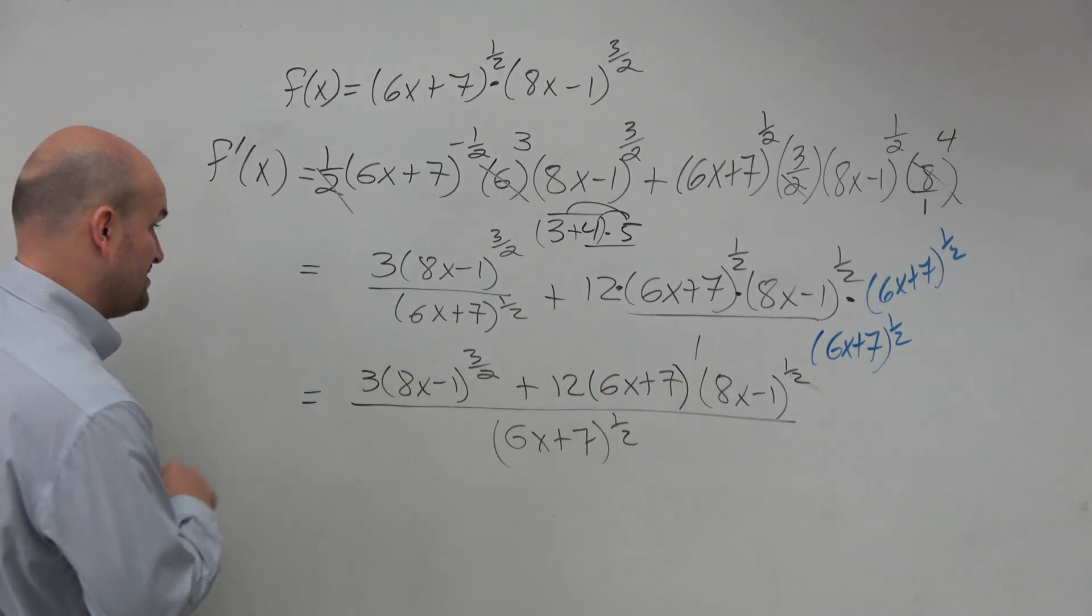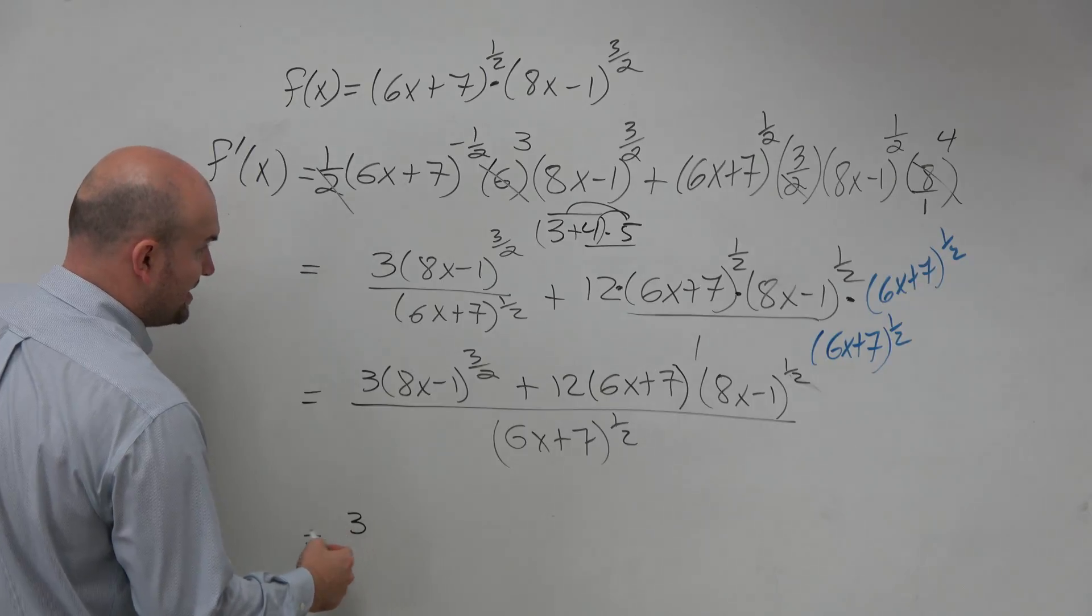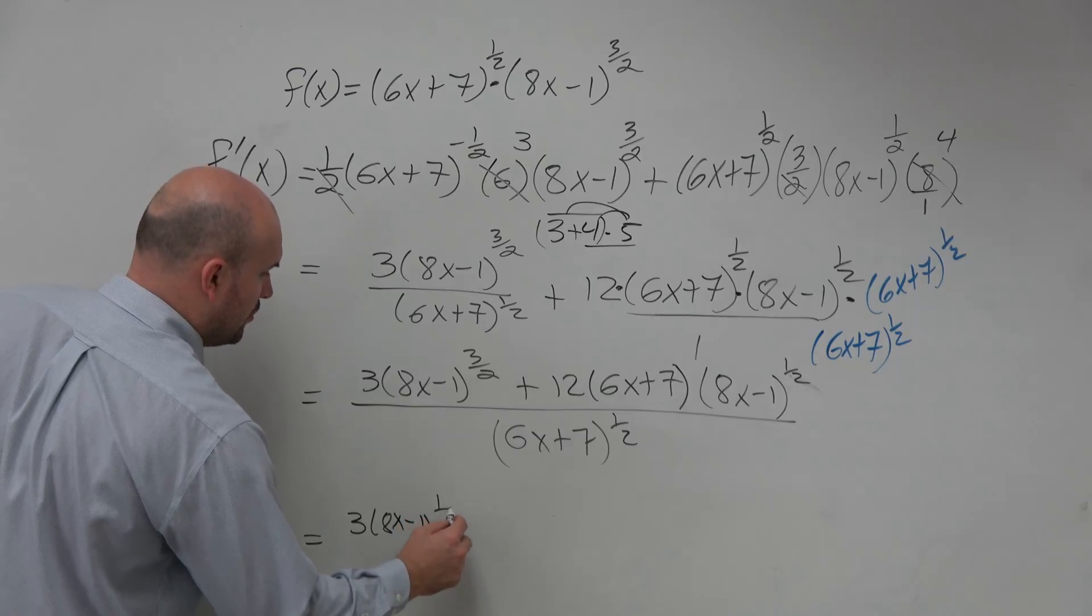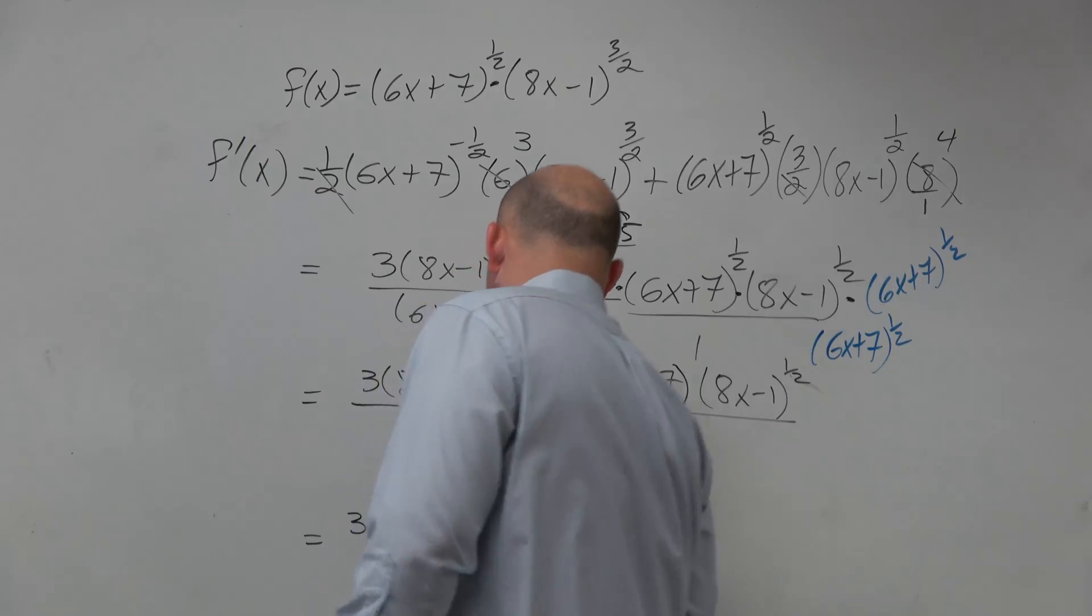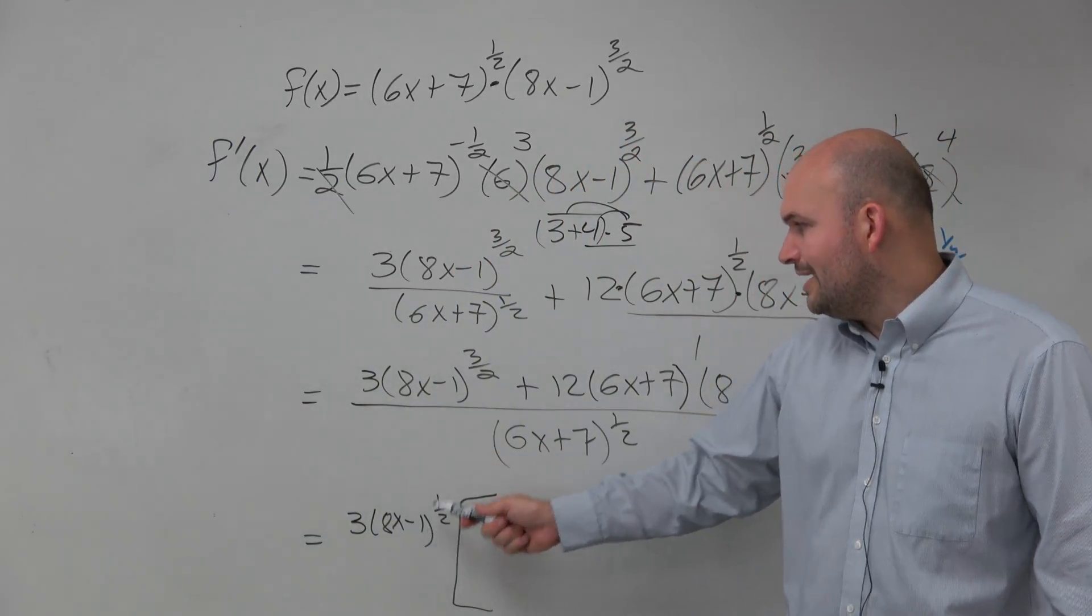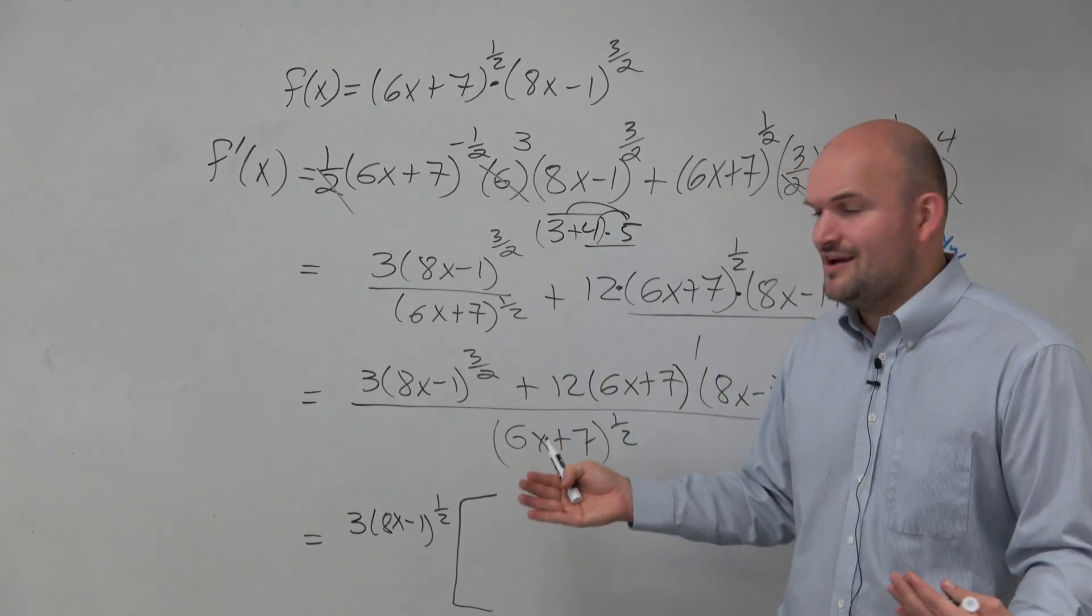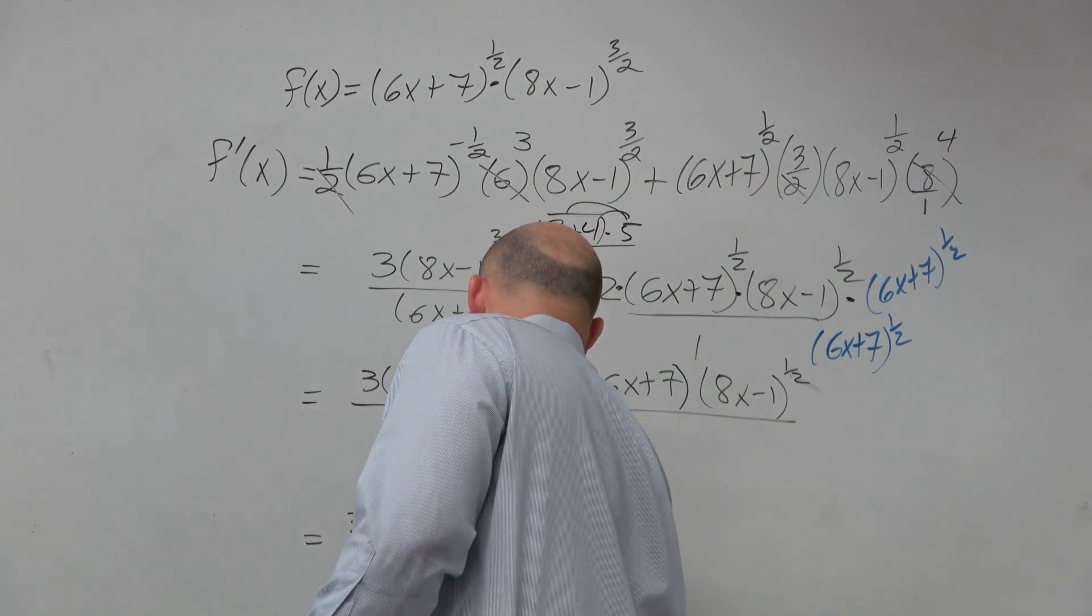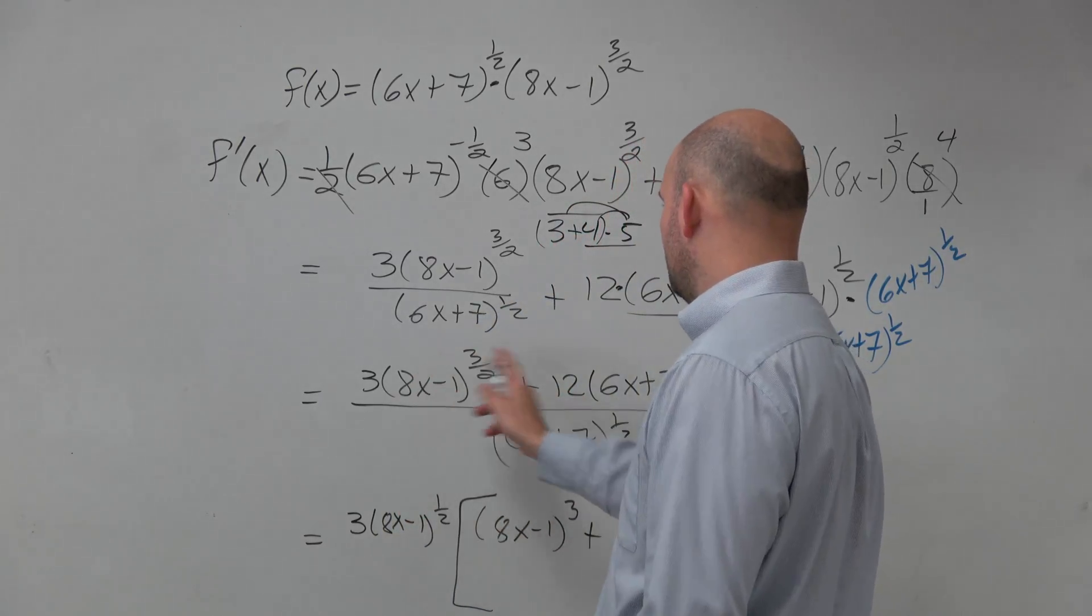So now let's factor out this term because this might be something you guys would see. We know that the 3 is in common, so we can take that out. We also know that there's this 8x minus 1 to the 1/2 power that we can take out. Now, this might be a little confusing. Like, say, well, what would I multiply 1/2 times to get to 3/2? Just think of multiplying. What do you need to multiply by 1/2 by to get to 3/2? 3. So this would be 8x minus 1 cubed plus, if you factor out a 3 from here, you'd get 4 times 6x plus 7.